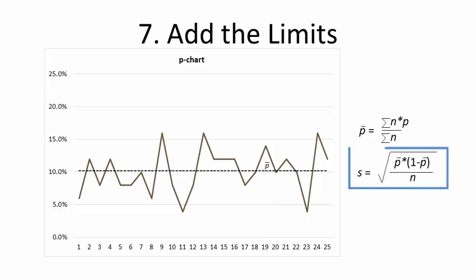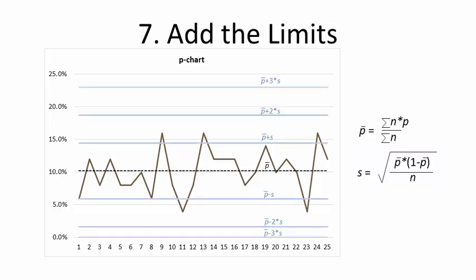Next, calculate s, the sample standard deviation. P-charts are based on the binomial distribution, so the calculation is straightforward. Finally, plot p-bar plus and minus one, two, and three standard deviations. If you come up with a negative number, just set the value to zero. Mark the zones accordingly, A, B, and C.